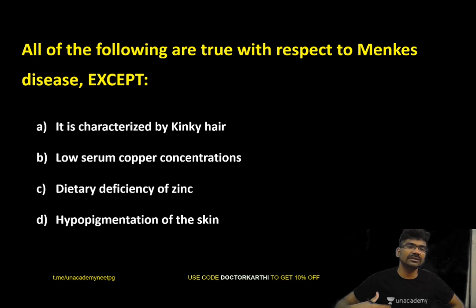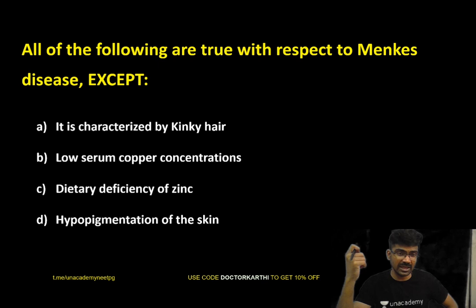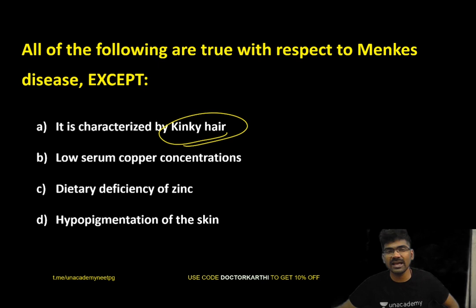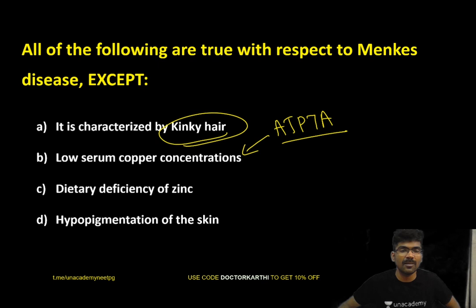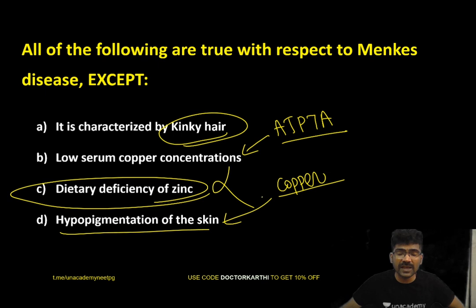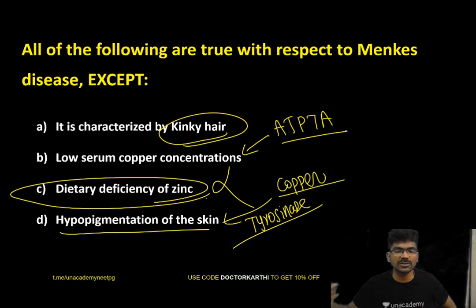Now for Menkes disease: which statement is false? Menkes is characterized by kinky hair and low serum copper. The false option is 'dietary deficiency of zinc.' In Menkes, the ATP7A gene is affected, impairing intestinal absorption of copper, which causes low serum copper. Hypopigmentation of skin occurs because copper is required for tyrosinase, the enzyme involved in melanin synthesis.